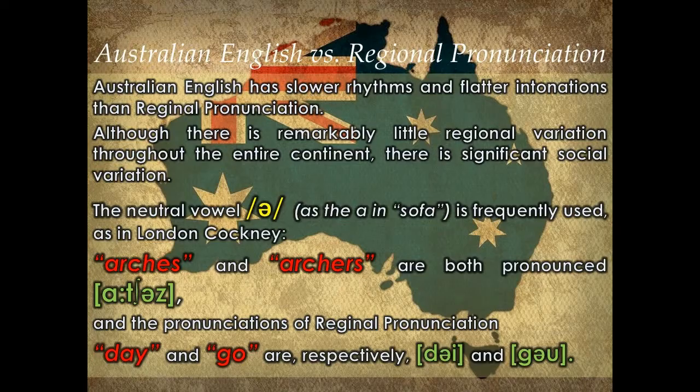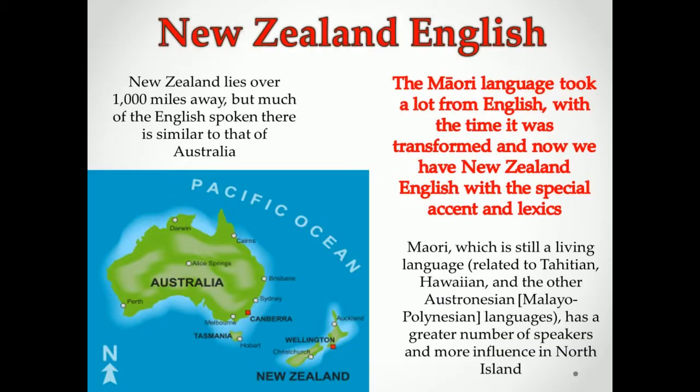New Zealand English: although New Zealand lies over 1,000 miles away, much of the English spoken there is similar to that of Australia. During the 19th century some English people established themselves in New Zealand. British, Australian, and American ships came to the island to trade with the inhabitants. At that period they were speaking just Maori. With time, Australian people — mainly traders and sailors — settled in New Zealand.